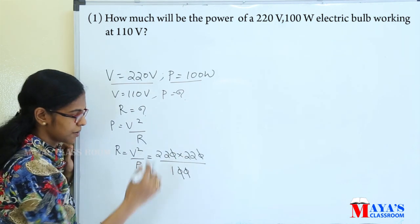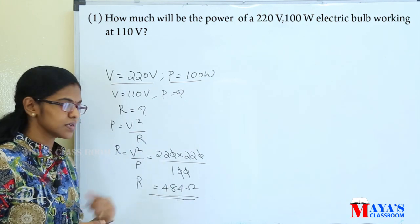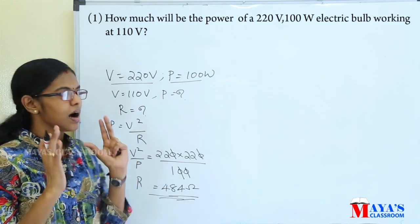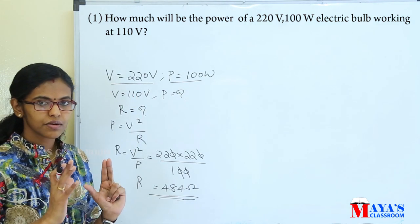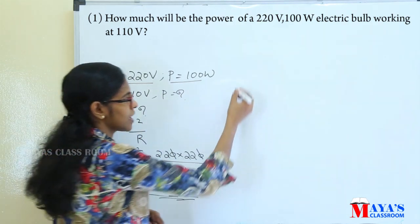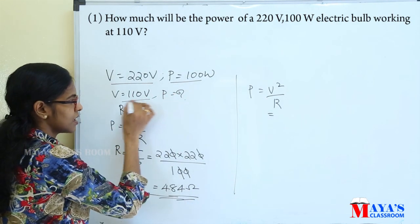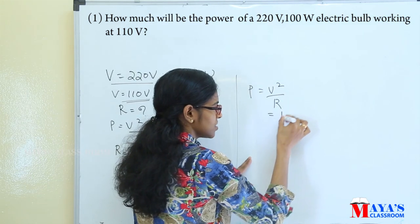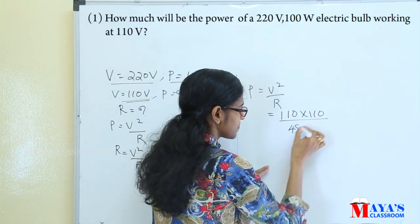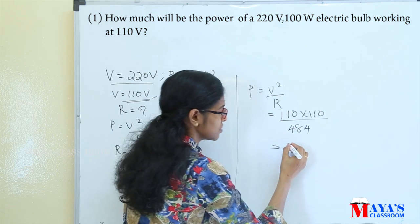That is equal to 22 into 22 multiplied, and that is 484 ohm. If the bulb has resistance and the bulb is equal to 110 volt, therefore P is equal to V squared by R. It is equal to 110 into 110 divided by the bulb resistance, that is equal to 110 into 110 divided by 484, then we will cancel it, that is equal to 25 watt.